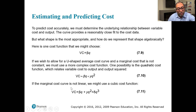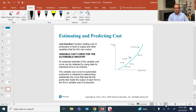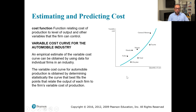To predict cost accurately, we must determine the underlying relationship between variable cost and output. A simple cost function is: Variable Cost = β·Q. To allow for a U-shaped average cost curve where marginal cost is not constant, we use a more complex function: β·Q + γ·Q². If the marginal cost curve is non-linear, we might use a cubic cost function. In the next part of this chapter, we will discuss the mathematical treatment of cost minimization.